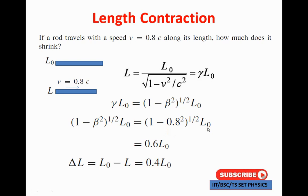The change in length is delta-L equal to L-naught minus L, where L-naught is the rest length and L is the contracted length in the moving frame. Substituting: delta-L equal to (1 minus 0.6) into L-naught, giving delta-L equal to 0.4 L-naught.